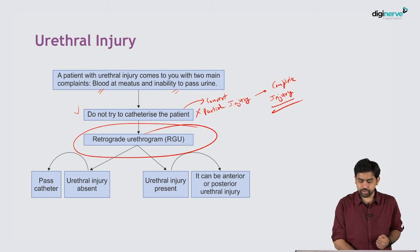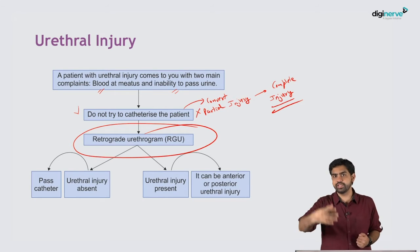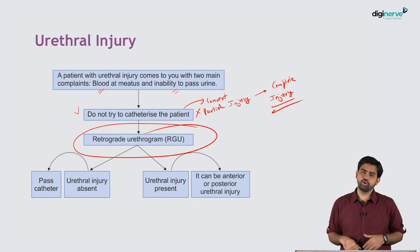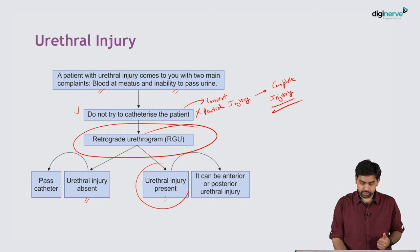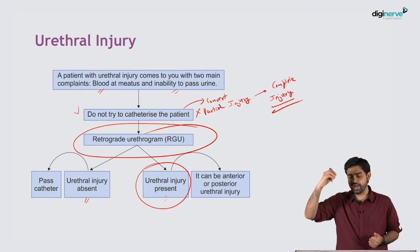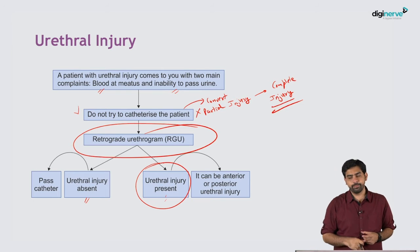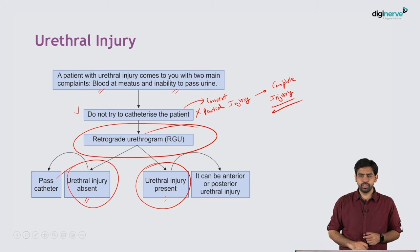What you need to do is perform a retrograde urethrogram (RGU). We have already covered the RGU and MCUG in detail in another section. When you perform a retrograde urethrogram, you are checking whether a urethral injury is present. If the dye extravasates out of the urethra, it confirms a urethral injury.